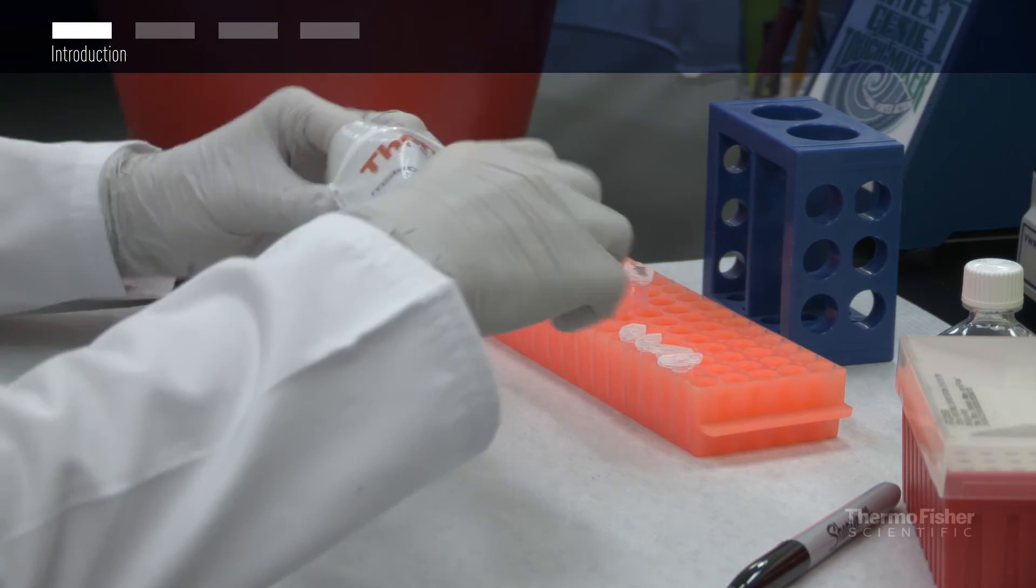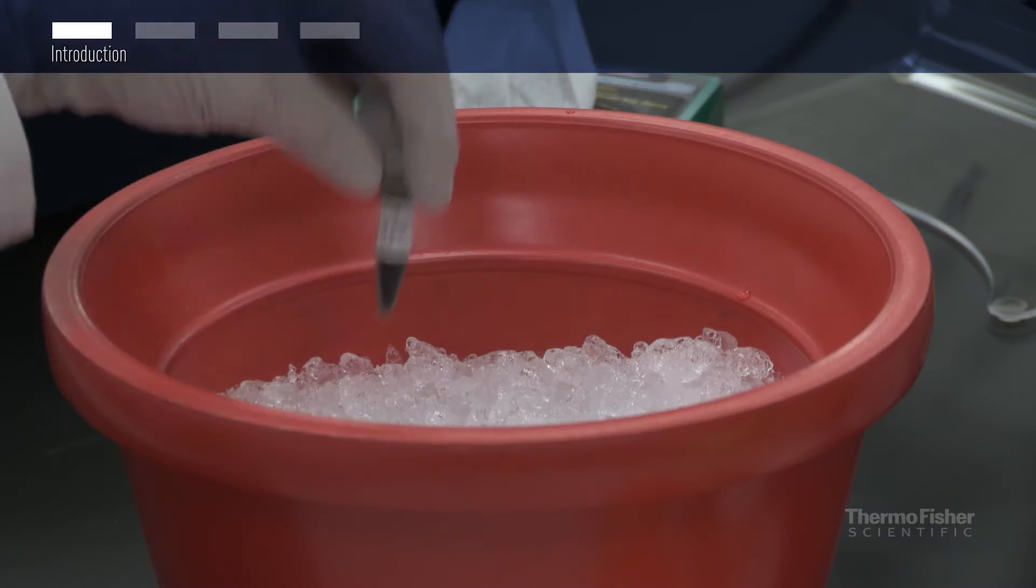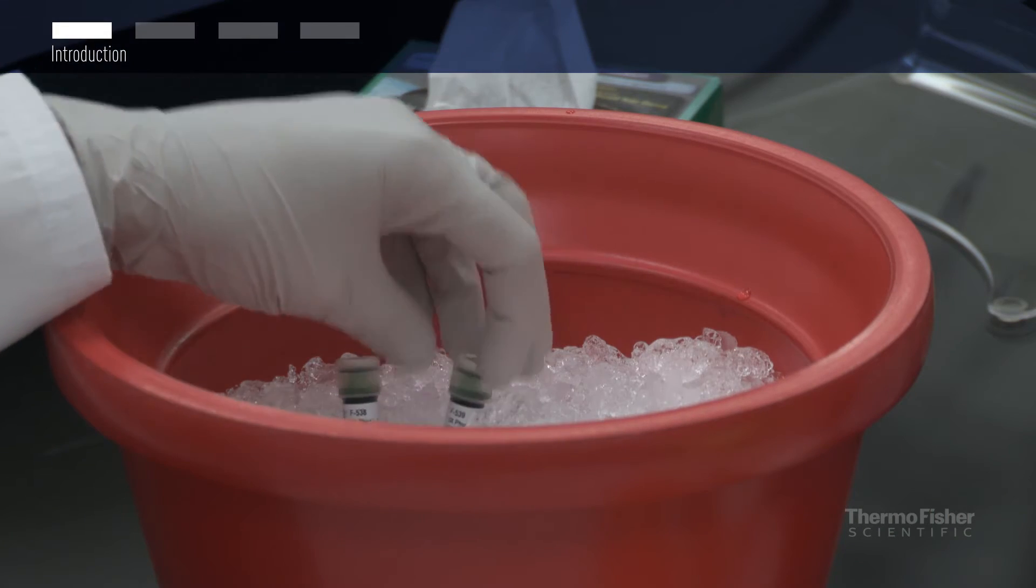For this example, we are going to set up a PCR reaction and amplify a 500 base pair fragment. Let's set up the cycling conditions first.